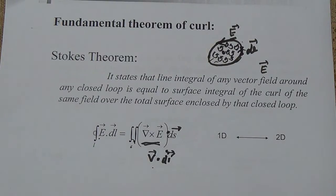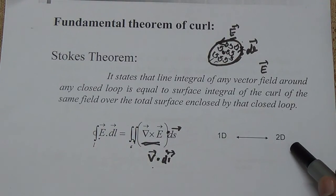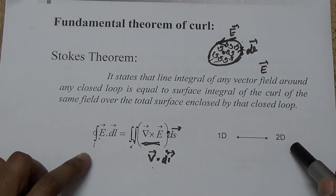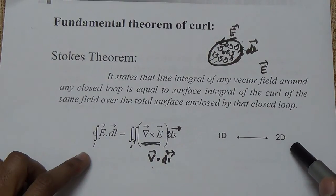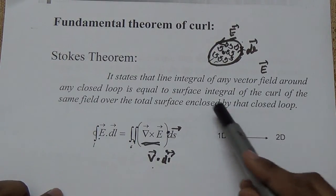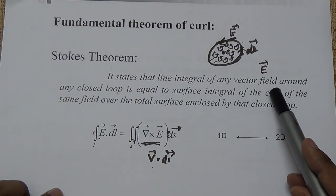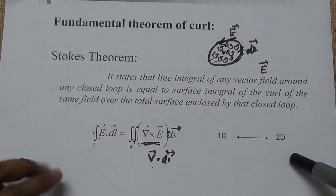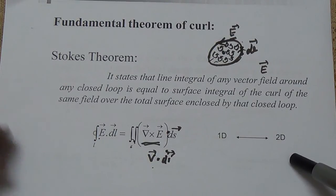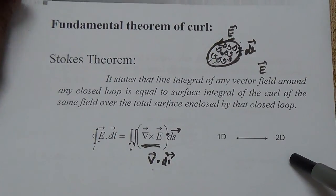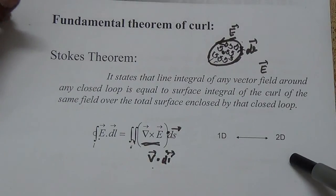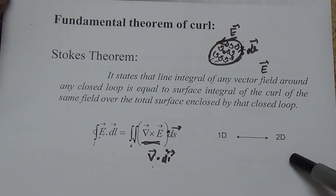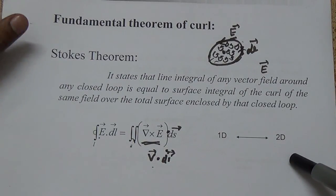This is the conversion from one-dimensional to two-dimensional. It states that the line integral of any vector field around any closed loop is equal to the surface integral of the curl of the same field over the total surface. Now, what do we have to do with these two mathematical statements — these two theorems?